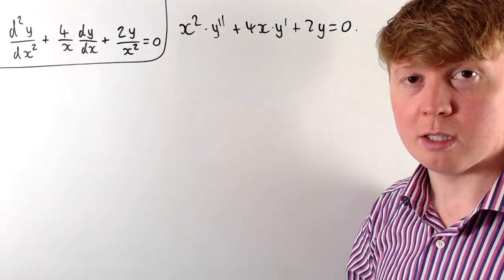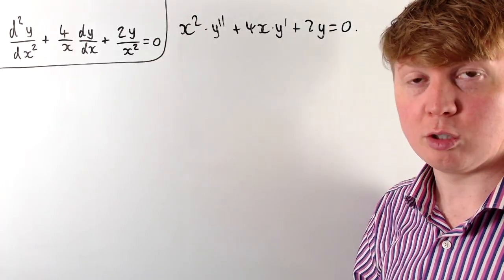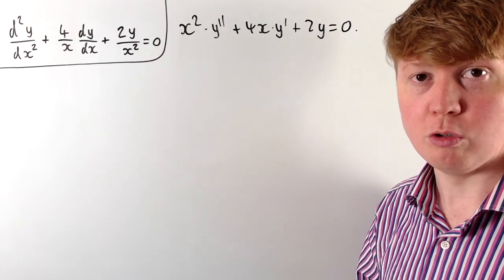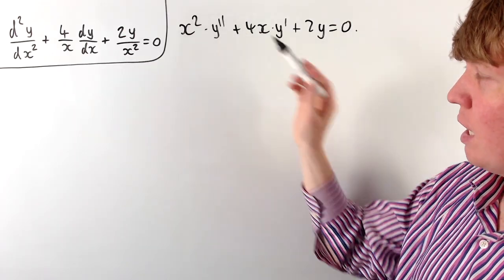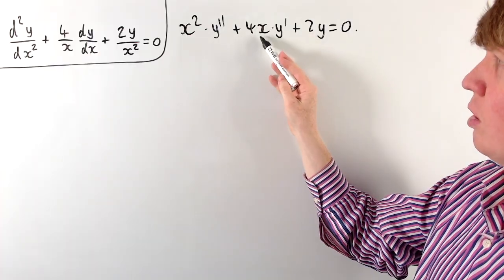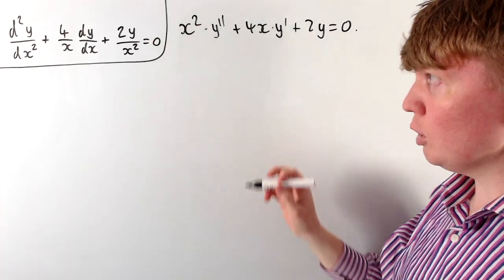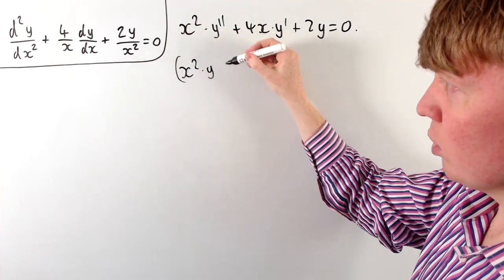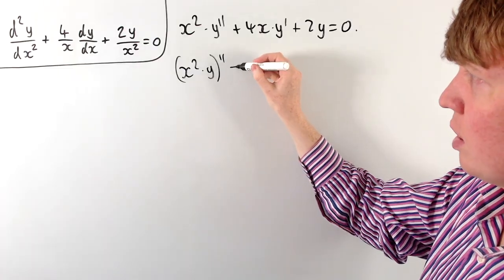The reason we've done this is that this expression now looks a bit more like the sort of thing you might get by differentiating something twice using the product rule. We've got x squared, we've got the second derivative of y, then almost a 2x in the middle, and just a 2 on the outside. Let's see what happens if we take x squared times y and differentiate it twice.